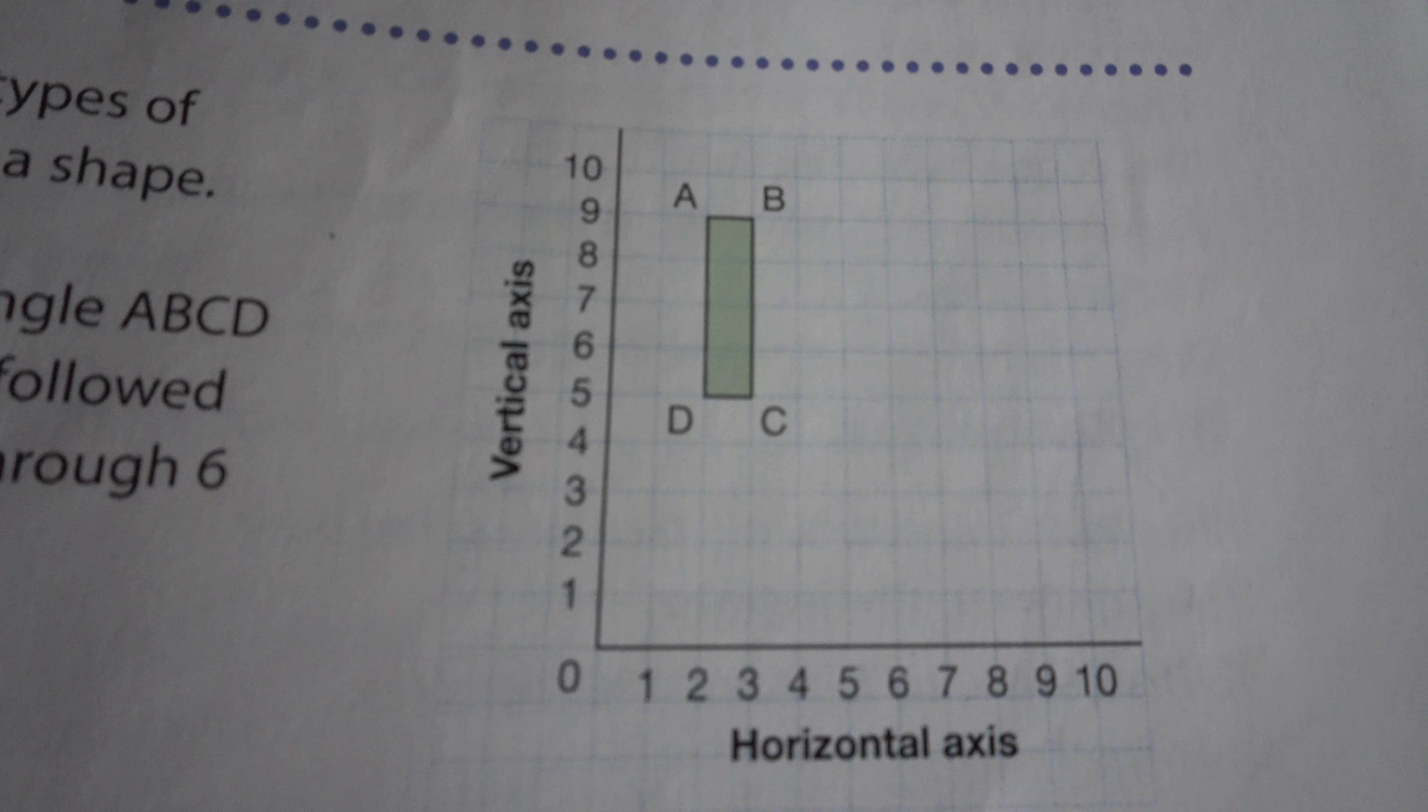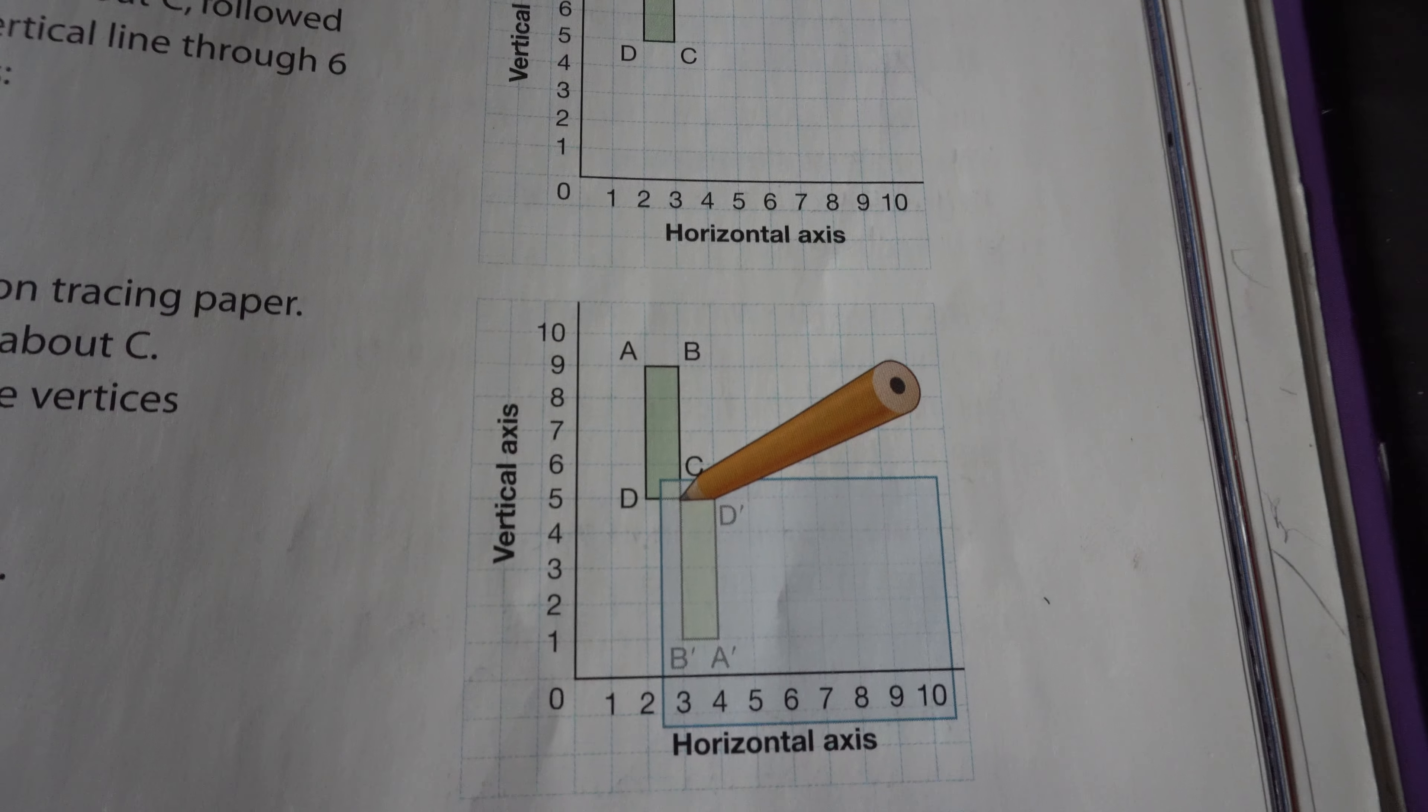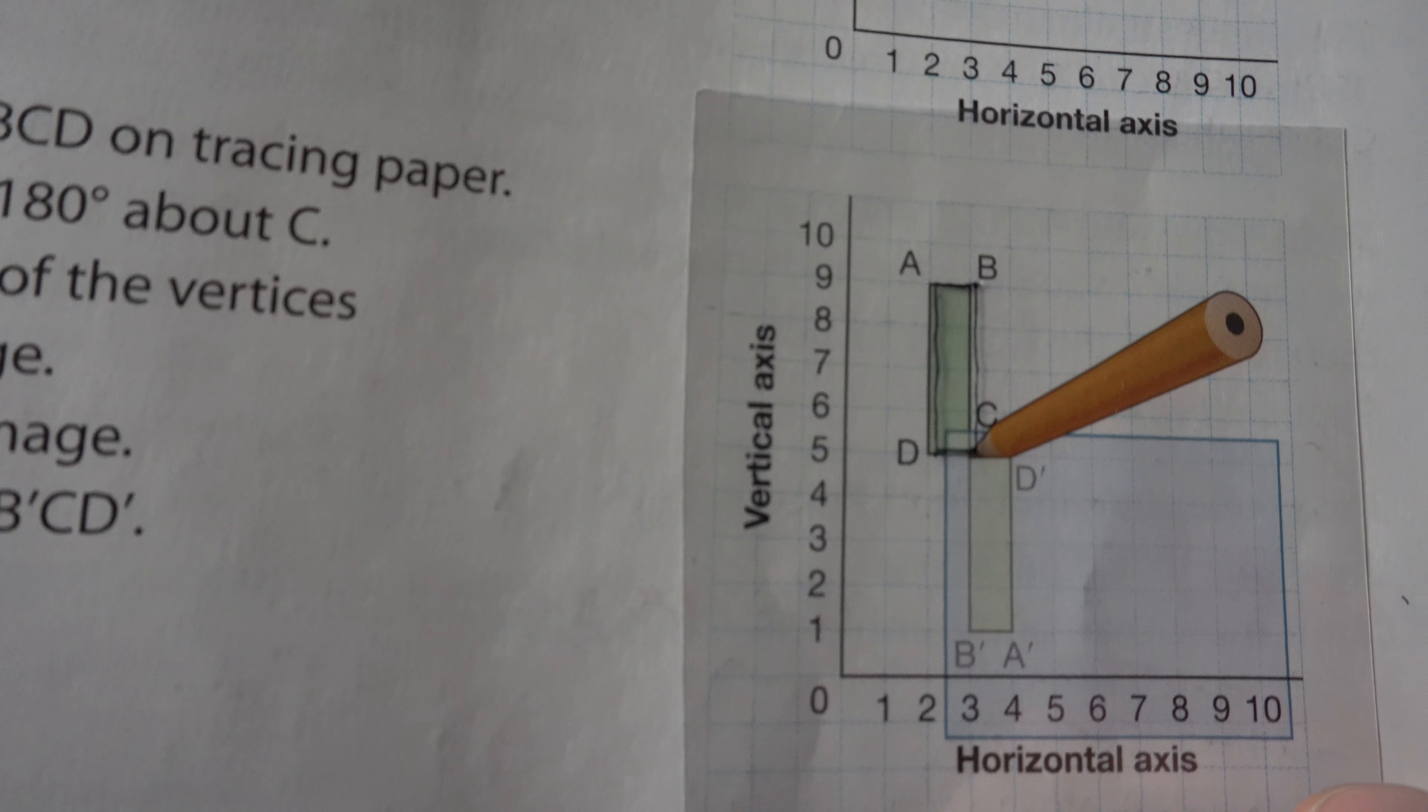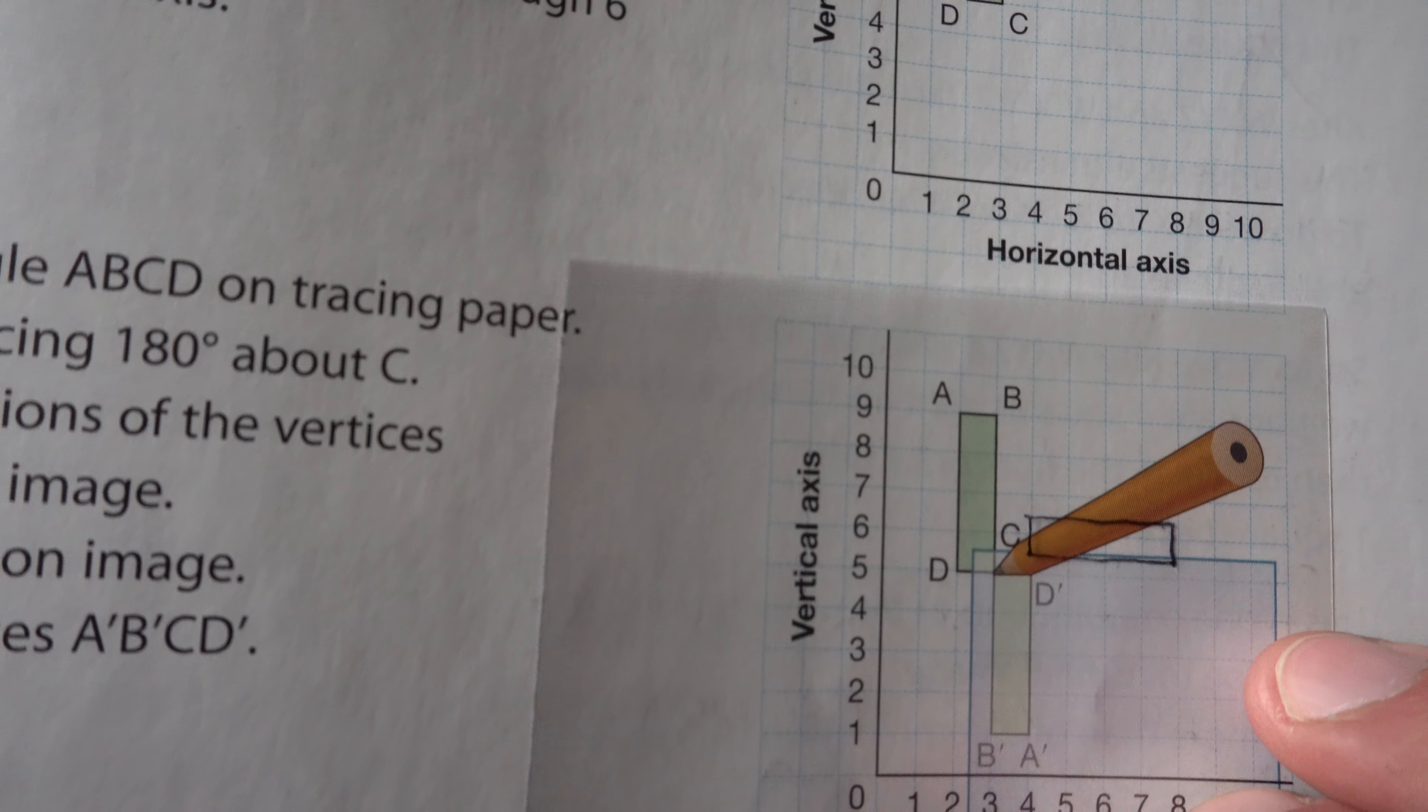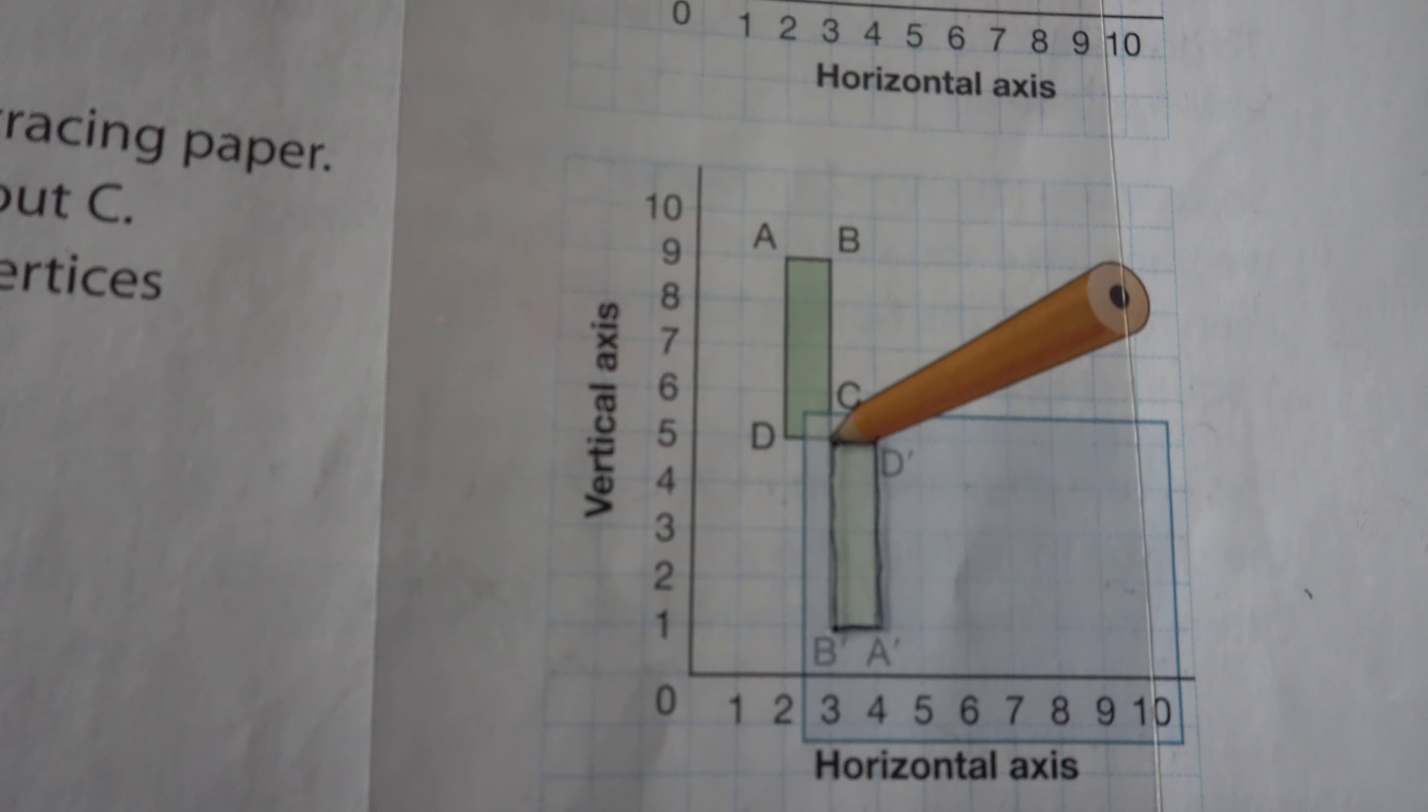So if we have this lonely looking quadrilateral there, ABCD, very creative. We could rotate that, do a rotation. So you see that this was rotated, about point C. So that's a 180 degree rotation.